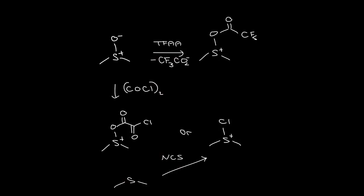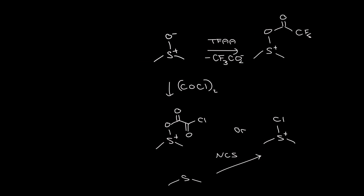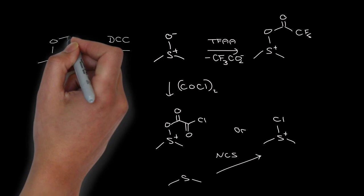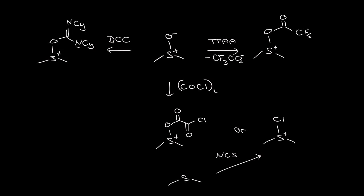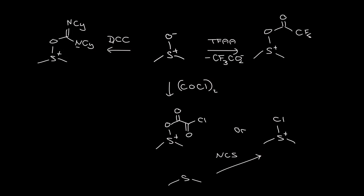Going back to DMSO as a starting material, if we react this with dicyclohexylcarbodiimide, to give a leaving group which will become a urea.